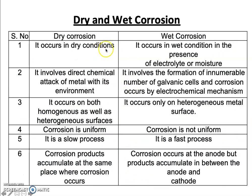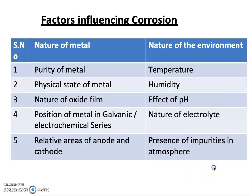The difference between dry and wet corrosion: dry corrosion occurs under dry conditions via direct chemical attack of metal with the environment, while wet corrosion occurs in the presence of moisture or an electrolyte and involves the formation of numerous galvanic cells. Dry corrosion occurs on both homogeneous and heterogeneous surfaces; wet corrosion always occurs on the metal surface. In dry corrosion the process is uniform and slow; in wet corrosion it is non-uniform and fast. In dry corrosion, products accumulate at the same place; in wet corrosion, products form between the anode and cathode.